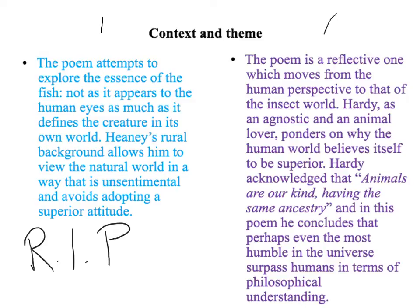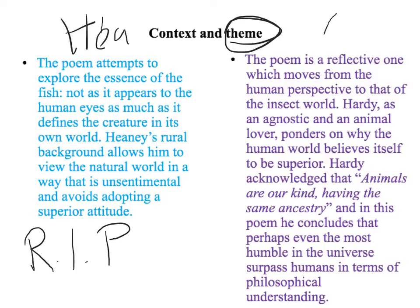Once you've got your RIP done and you've done your introduction, this context section can be included in the introduction if you wish, or it can be a separate paragraph - it's really up to you. But what you have to do is show the examiner that you understand the poem and understand the themes of the poem. By understanding the theme, you'll naturally find your argument, because once you read about Heaney's themes and Hardy's themes, you can clearly see where the differences lie. It's the identification of that difference in every paragraph that makes up your argument.